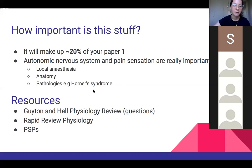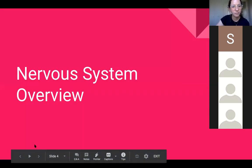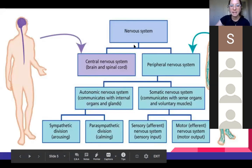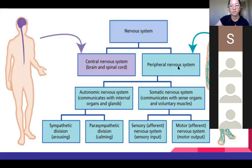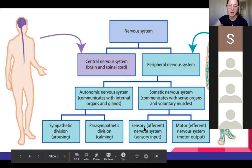Some resources I'd recommend are Guyton Hall Physiology Review — that's a question book — Rapid Review Physiology, which is a great summary, and PSPs. The nervous system is split into the central nervous system — brain and spinal cord — and the peripheral, which is everything else. Within peripheral, there's somatic, which is roughly voluntary, and autonomic, which is involuntary. Within somatic, you have afferent sensory and efferent motor fibres, and within autonomic, sympathetic and parasympathetic.